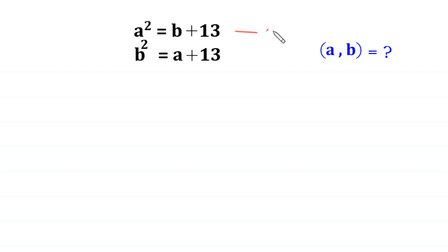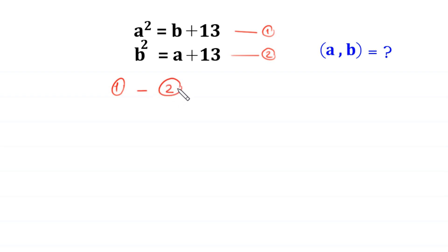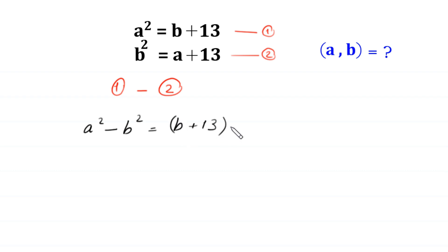Let us call this equation 1 and this equation 2, and we subtract equation 2 from equation 1. We write a squared, and we subtract the left-hand side of equation 2, b squared, equal to the right-hand side of equation 1, b plus 13, and from this we subtract the right-hand side of equation 2, a plus 13.